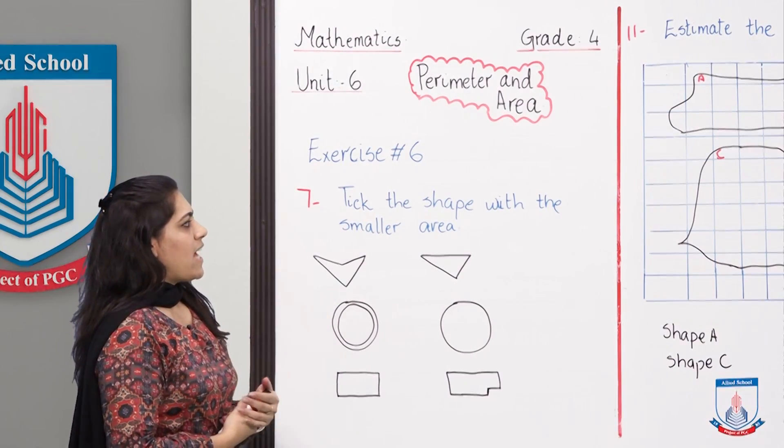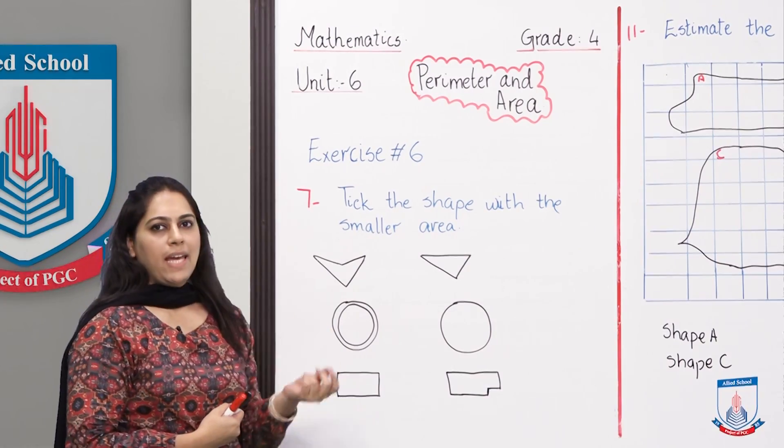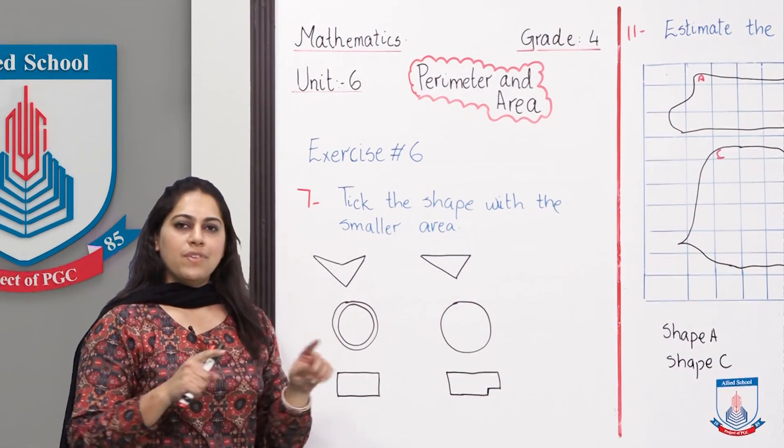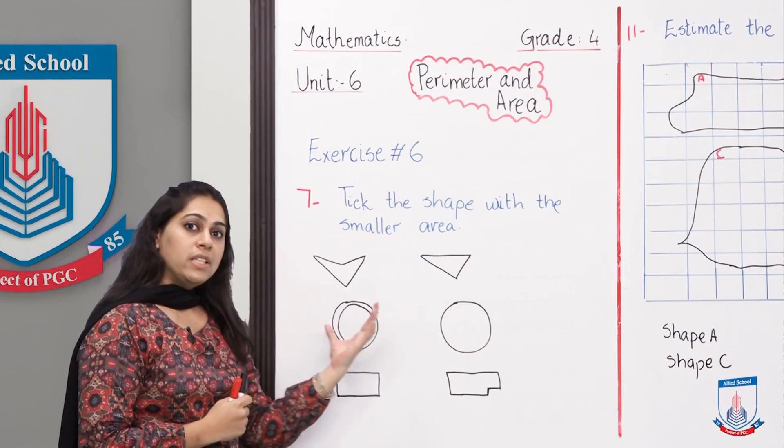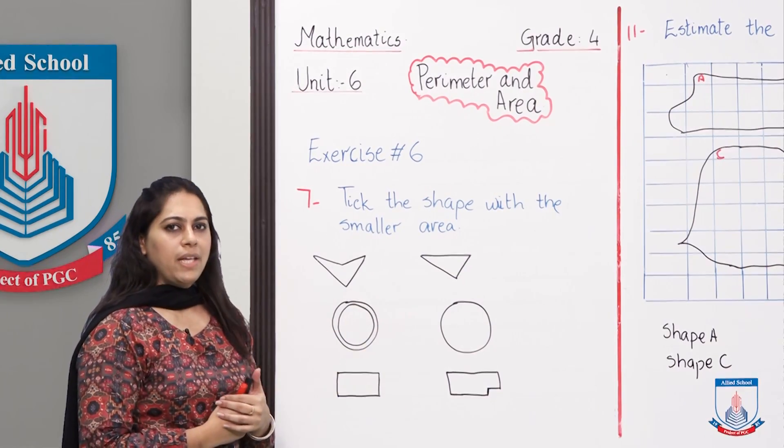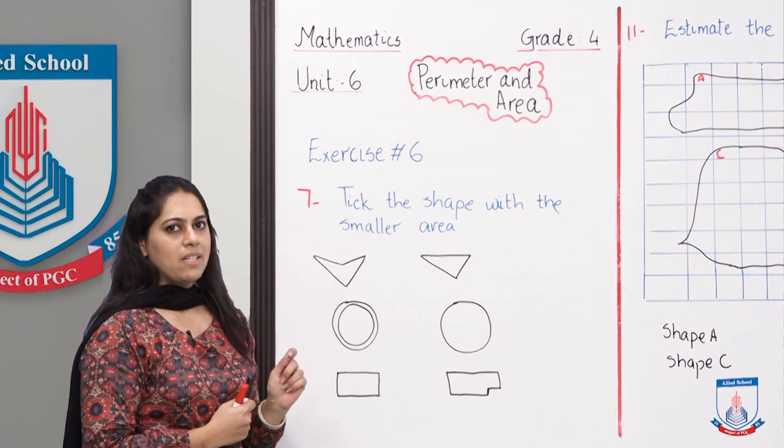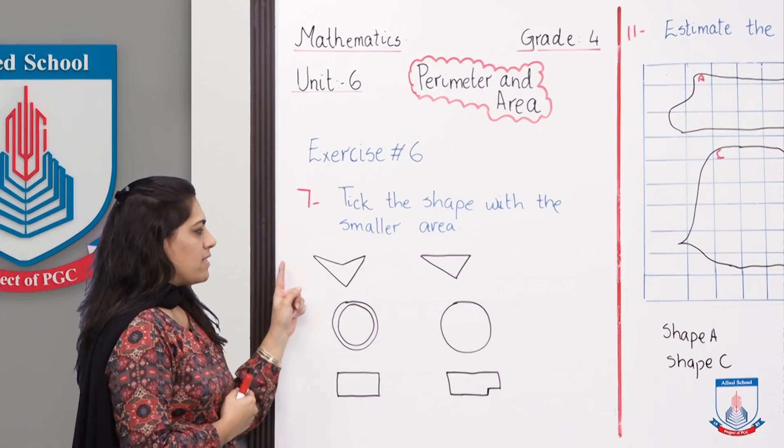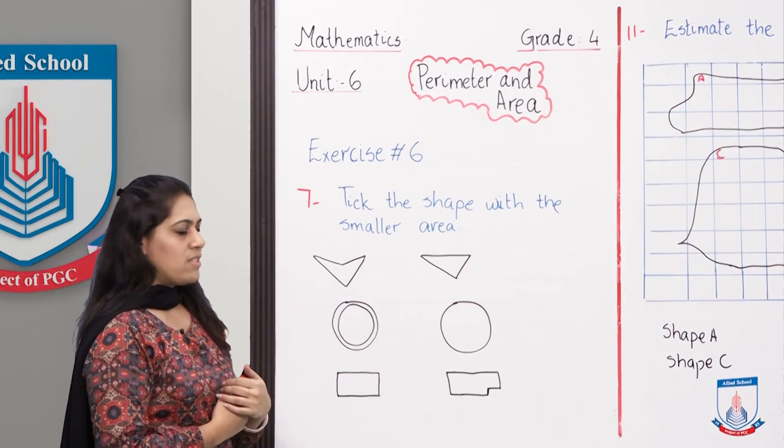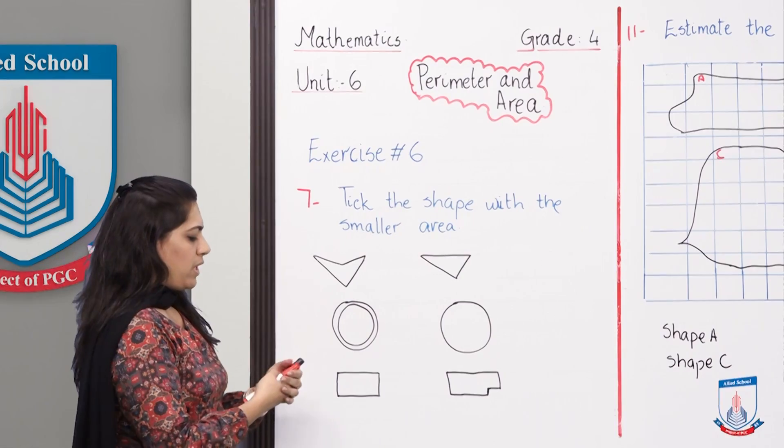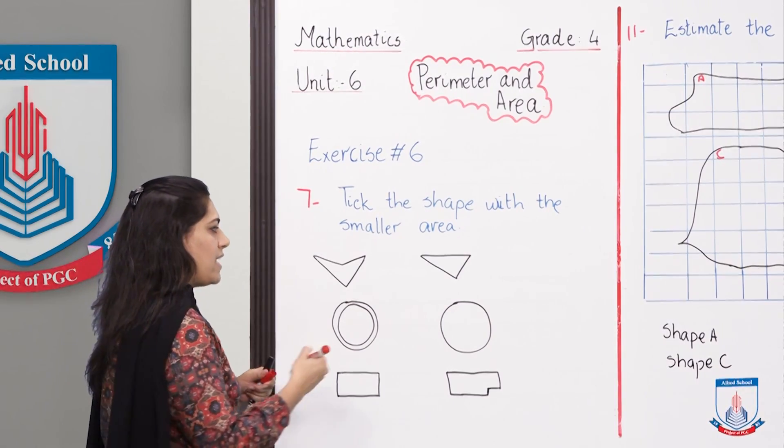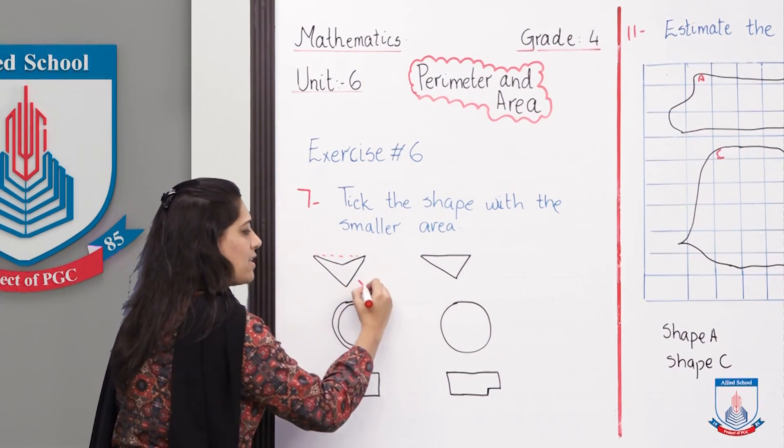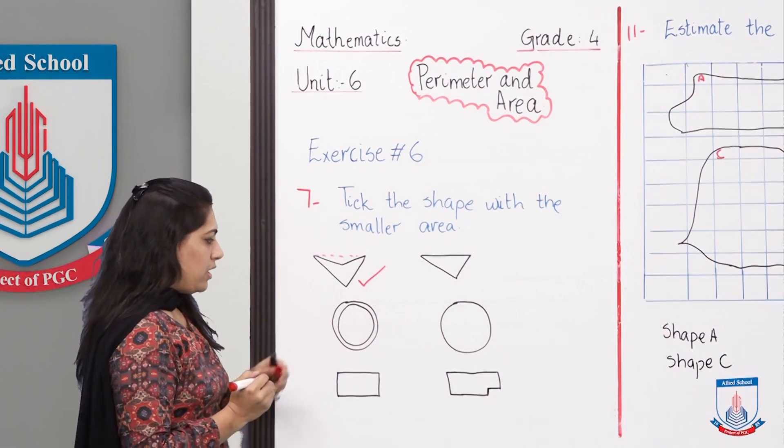It says tick the shape with the smaller area. Let's compare which shape is smaller and mark it with a tick. Which shape do you think is smaller, is it this triangle or this triangle? Yes, children, the shape with the smaller area is this one because this part of the shape is not been covered. So yes, this is the smaller area.